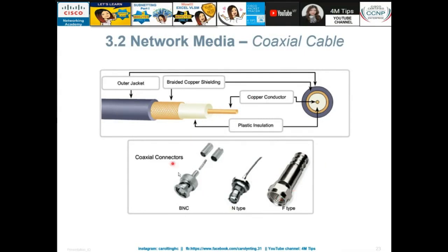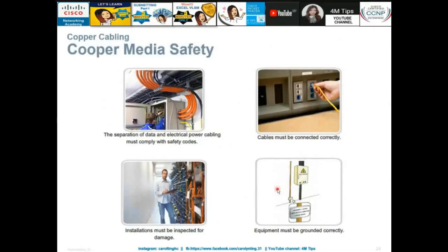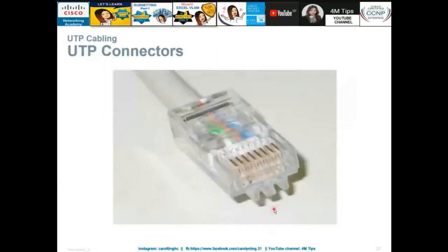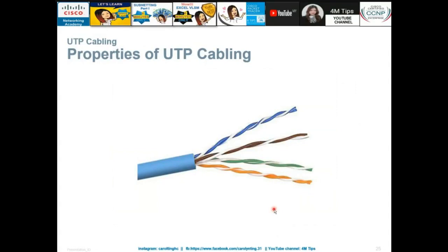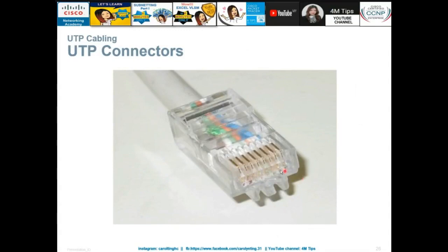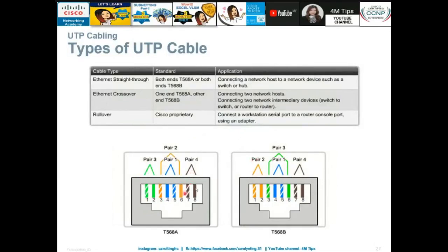Coaxial cable connector types include F-type, N-type, and BNC. In real organizations, cables are grounded along the ceiling or floor and properly managed and labeled. For UTP cabling, the design connects to connectors with color-coded wires that go through gold-colored contacts when plugged into the computer via RJ45. The color code determines whether you form a straight-through, rollover, or crossover cable.